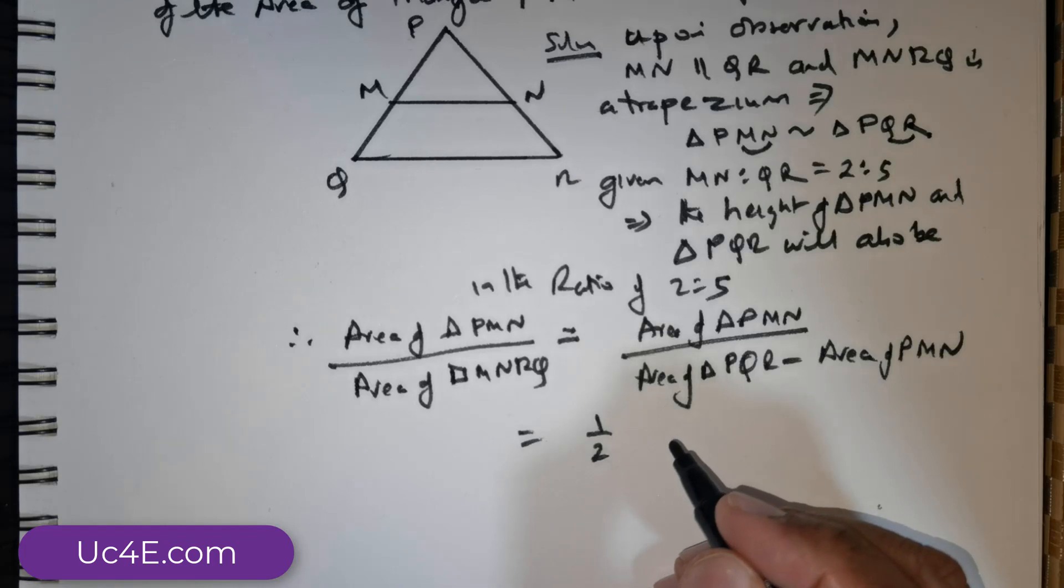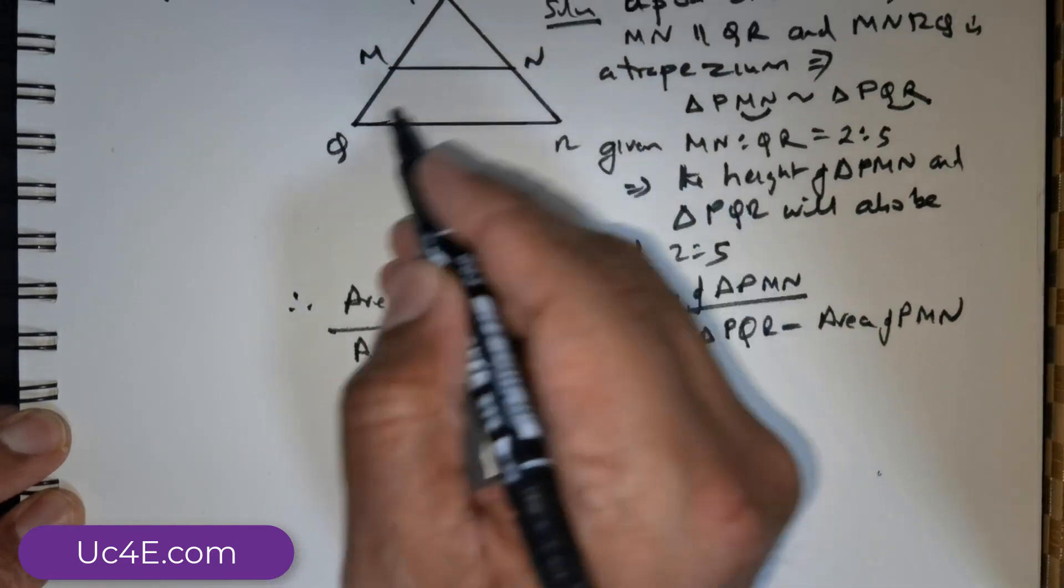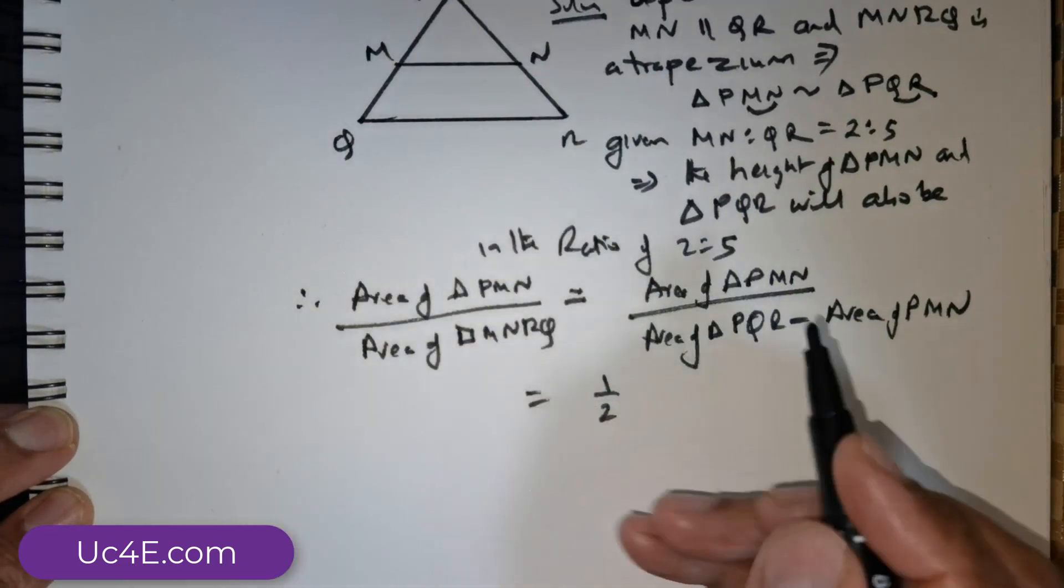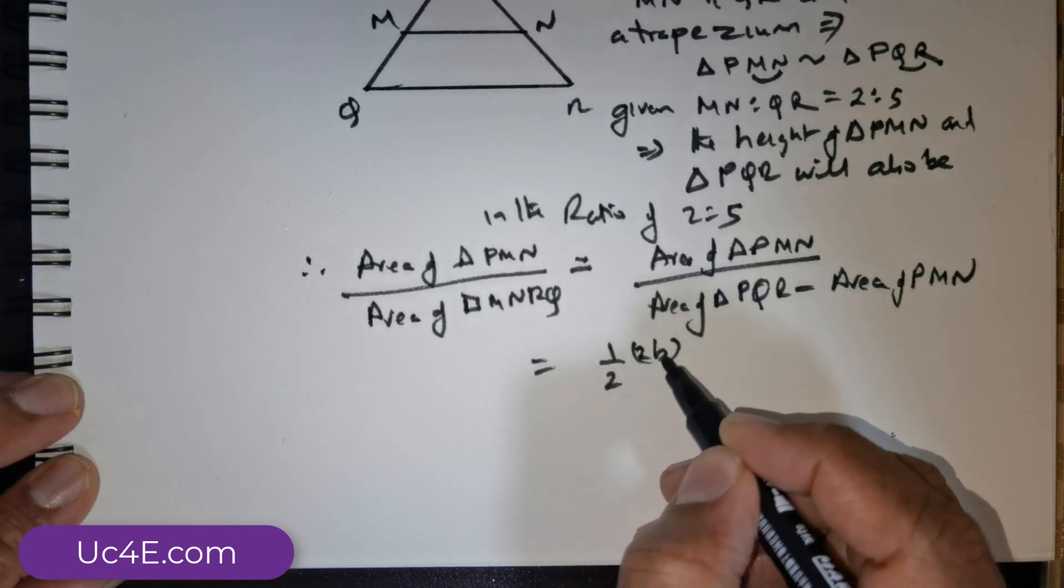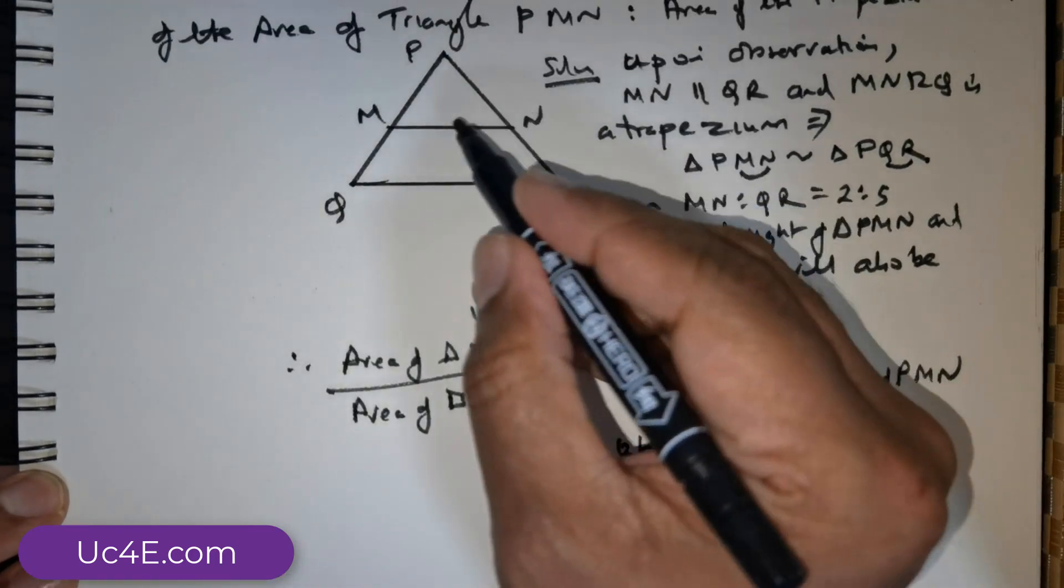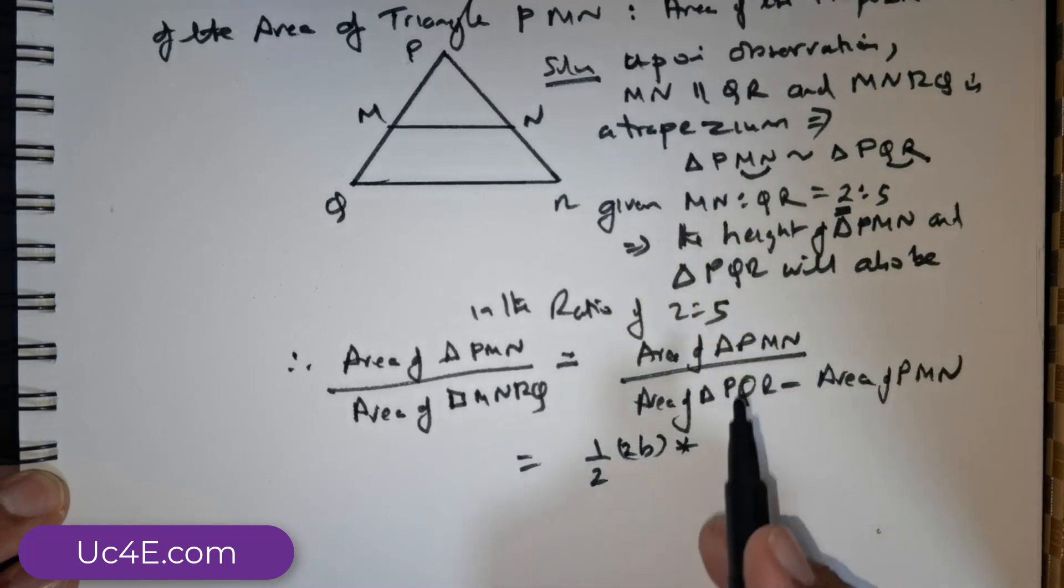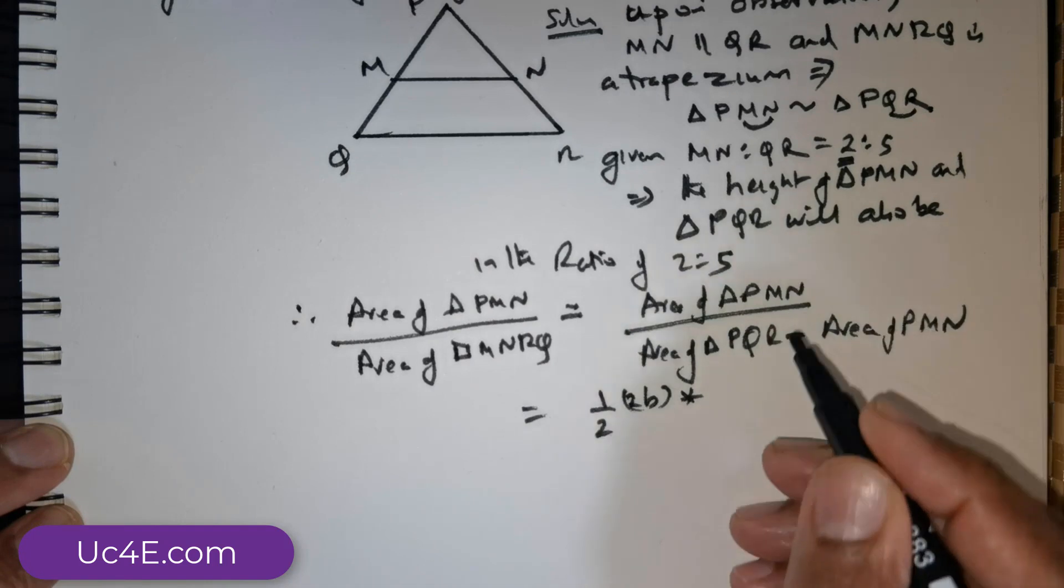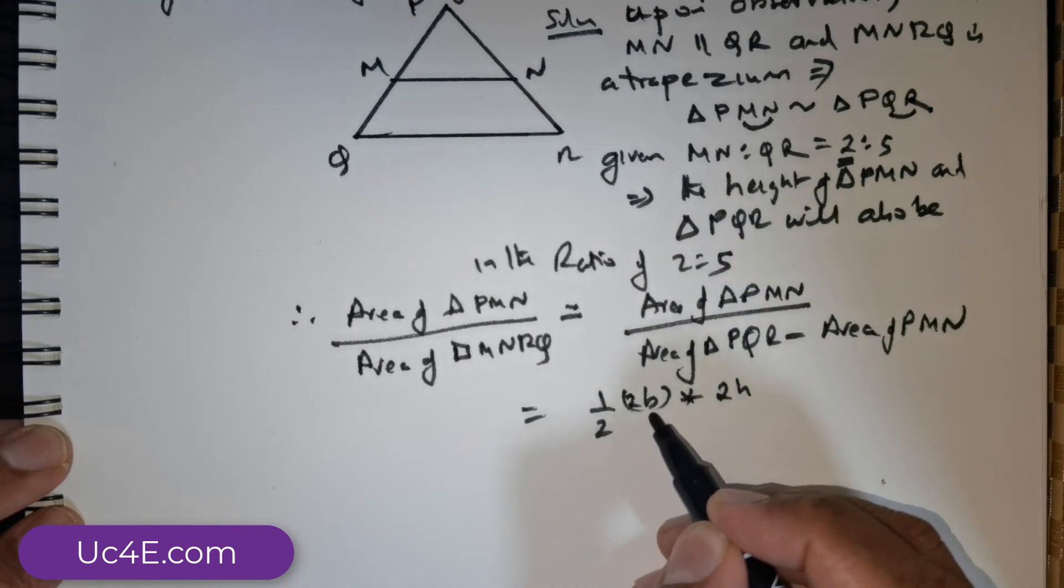MN is the base and the height will also be in that 2X. In this case, if I am taking X to be the base and Y to be the height, then it is going to be 2X times 2Y. Or if I take base to be as some B units, then the base would be 2B. So this is going to be 2 times B, multiplied with the height. The height would be 2 times H. So I am taking the standard representation of B and H.